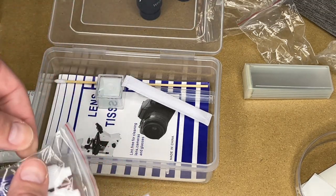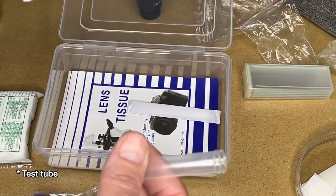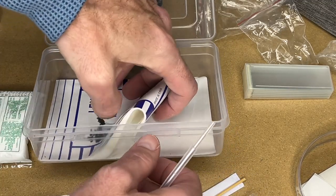A pipette, looks like some dyes, slide covers, like a plastic petri dish, a swab, toothpicks maybe, and some lens tissues.